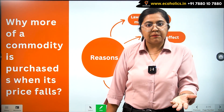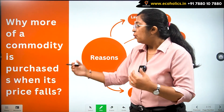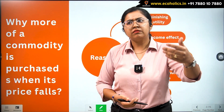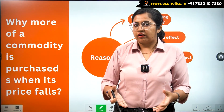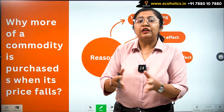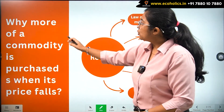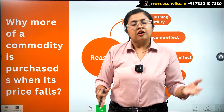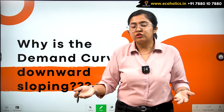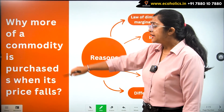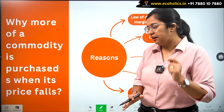To understand this, we frame a simple question: what happens when there's a downward slope in the demand curve? Reason number one is that more of a commodity is purchased when its price falls. When a certain commodity's price falls — let's take the example of chocolates — because of the law of demand that we learned in the previous lecture, the quantity demanded increases and more of that commodity is purchased.